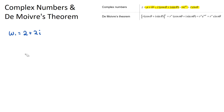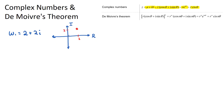If we have our complex number here in Cartesian form, we can actually draw where this number is on an axis. In complex numbers, this is called an Argand diagram, where the vertical axis is the imaginary and the horizontal is the real. We can plot our number because it has a real component of positive 2 and an imaginary component of positive 2.